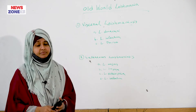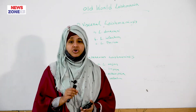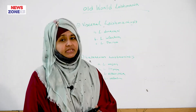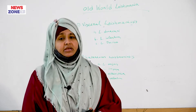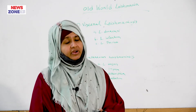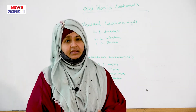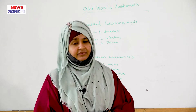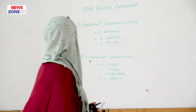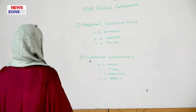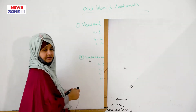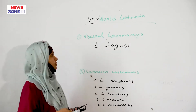Visceral Leishmaniasis means the disease is confined to the viscera, and cutaneous Leishmaniasis means Leishmania is confined in the skin. There are no visceral manifestations in cutaneous Leishmaniasis. That is all about Old World Leishmania.